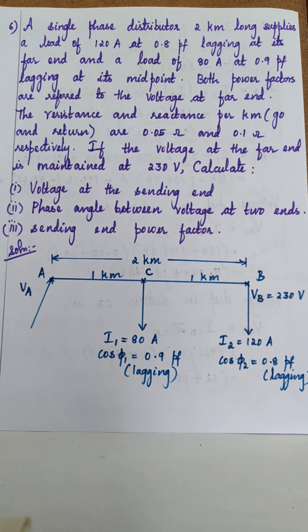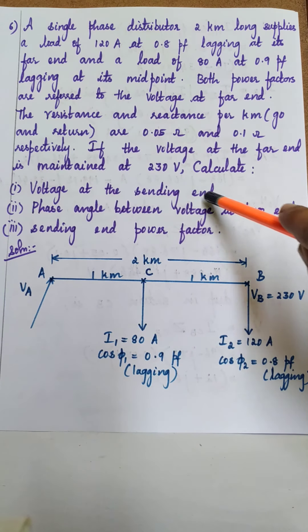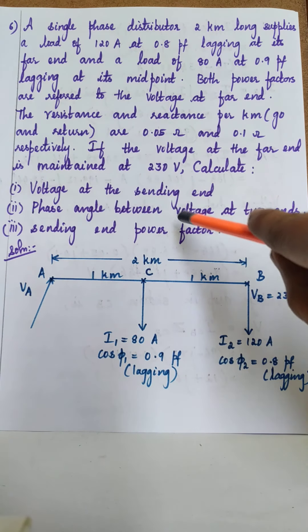Problem number 6. A single-phase distributor 2 km long supplies a load of 120 Ampere at 0.8 power factor lagging at its far end and a load of 80 Ampere at 0.9 power factor lagging at its midpoint. Both the power factors are referred to the voltage at the far end. The resistance and reactance per kilometer for both the go and return conductors are 0.05 Ohm and 0.1 Ohm respectively. If the voltage at the far end is 230 volt, calculate: first, voltage at the sending end; second, phase angle between voltages at the two ends; third, sending end power factor.